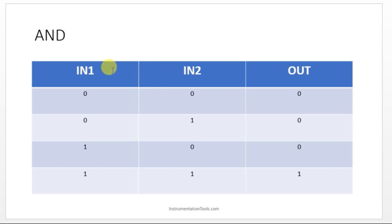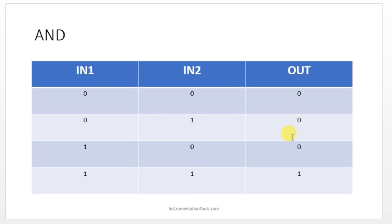In CX Programmer, we will use two inputs — let's name them IN1 and IN2 — and one output named OUT. We have four conditions: if both inputs are OFF, output is OFF; if any one input is ON, output is still OFF; only when both inputs are ON should the output be ON.